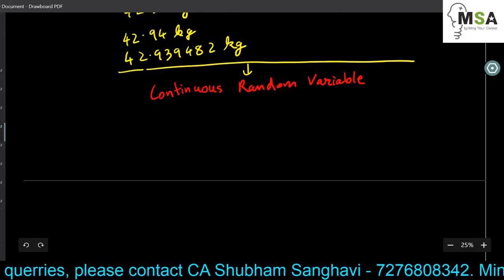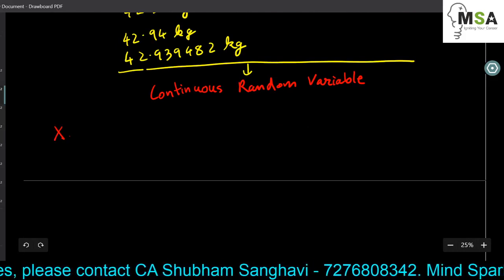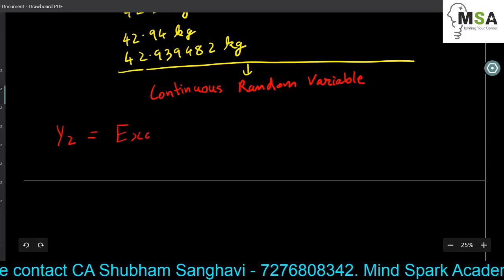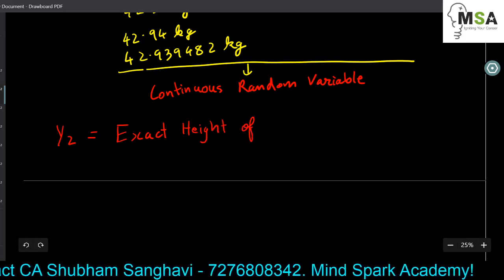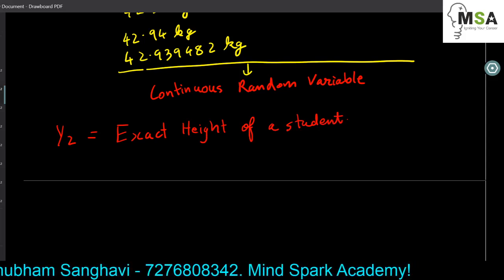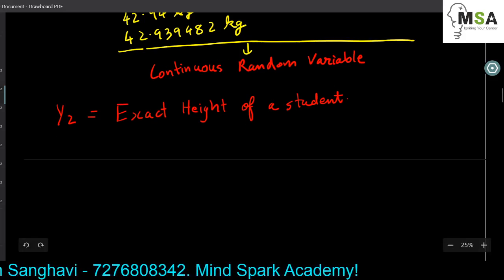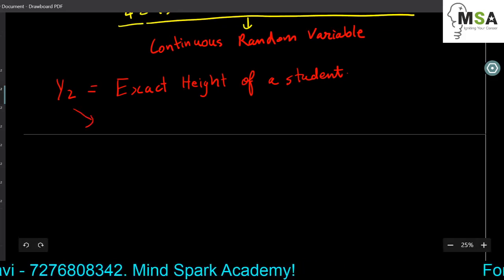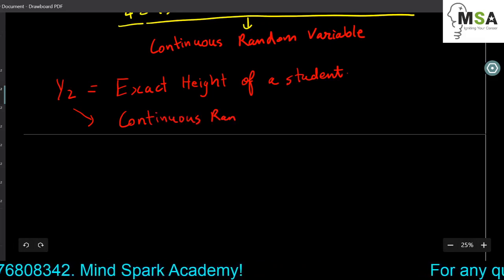Let's take a few more examples. Let random variable Y2 be the exact height of a student. Similar to the previous example, the height of a student can never be exactly counted to certain centimeters or millimeters — it will always go on to infinity. The height cannot be measured exactly, and that is why this is again a continuous random variable.